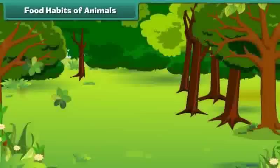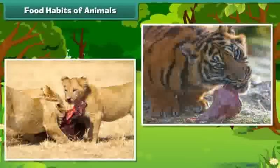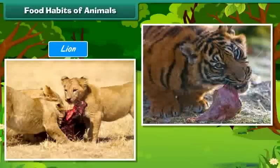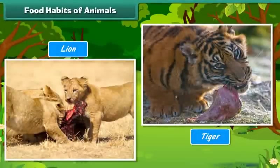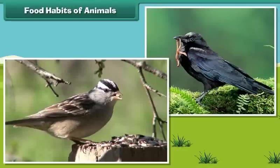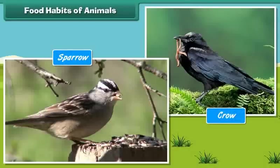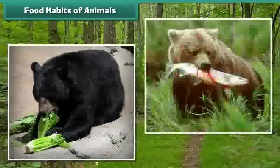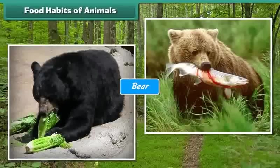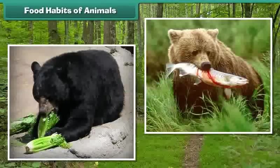Some others eat meat. For example, lion, tiger, etc. Some animals eat seeds and worms. For example, sparrow, crow, etc. Some animals eat both plants and meat. For example, bear, etc. Some animals are fond of special food items.